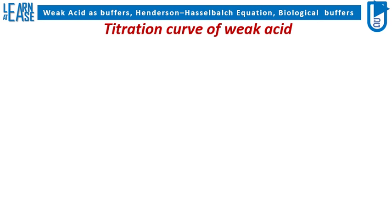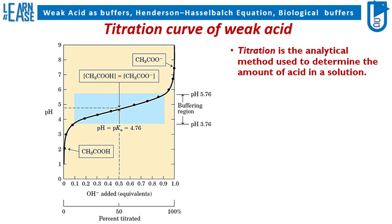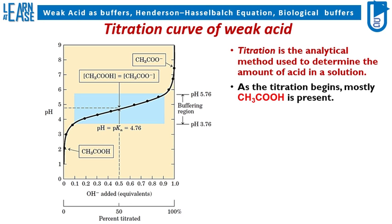I will now explain the titration curve of weak acid. Titration is the analytical method used to determine the amount of acid in a solution. The titration curve of acetic acid, CH3COOH, is shown in the image on the left. The initial pH of the acetic acid solution is 1, as partial dissociation of CH3COOH releases H+ ions in the solution, making the pH acidic.